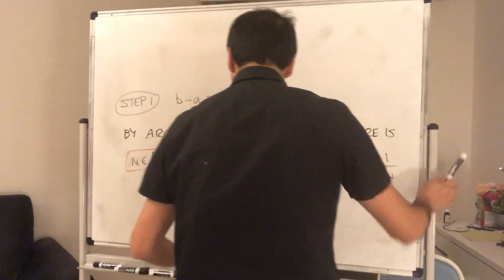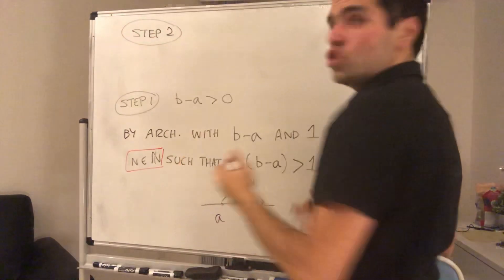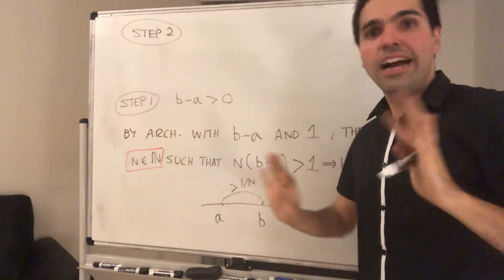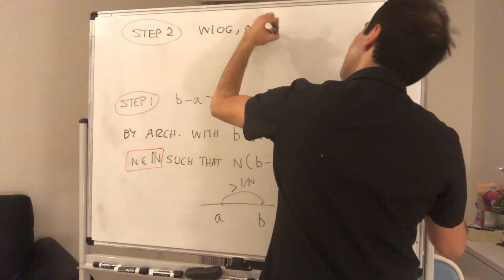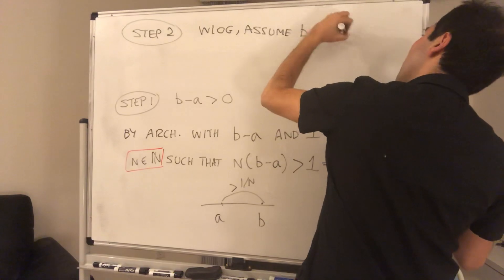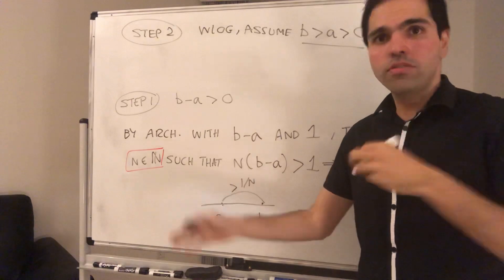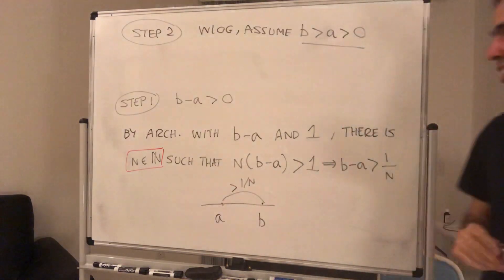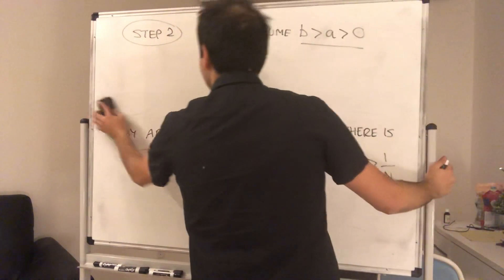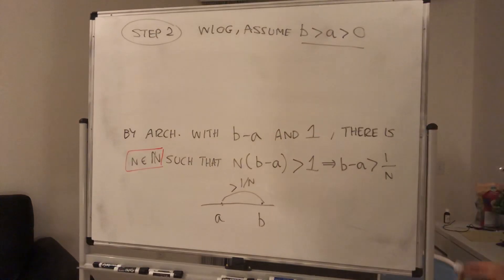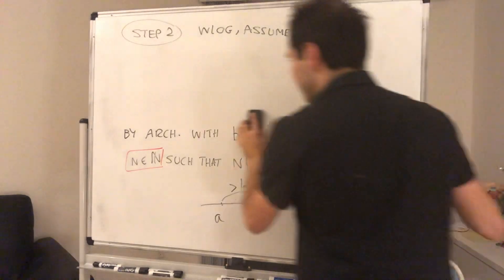Now we just want to find a numerator. And for this, just to simplify the proof, assume everything is positive. So without loss of generality, assume b is greater than a, which is positive. And for the other cases, you can check my notes. You just adapt the proof for all the other cases. So it's not a huge problem. Okay, so you assume this, and why is this important? So it's actually quite a nice proof.